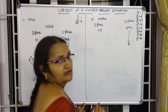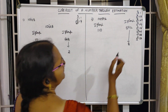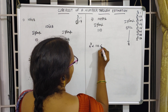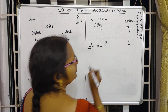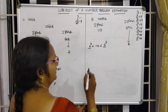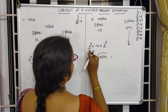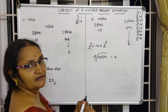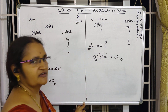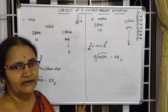Now coming to the second group: 110. We find which two consecutive cube numbers 110 lies between. Four cubed is less than 110, which is less than five cubed. Among these two, the smallest number is 4, so 4 acts as the tens place digit. Therefore, the cube root of 110592 equals 48. Thank you.